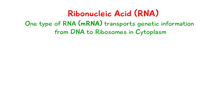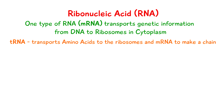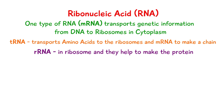The three main types of RNA are mRNA, tRNA, and rRNA. mRNA carries the message from the DNA to the cytoplasm. tRNA transports the amino acids to the mRNA to make a chain. rRNA is found in the ribosomes and helps to make the protein.